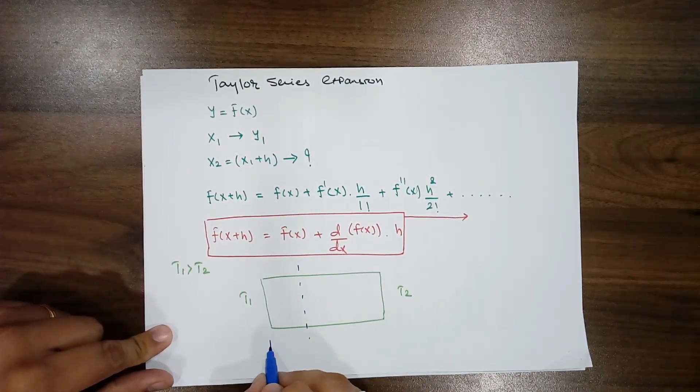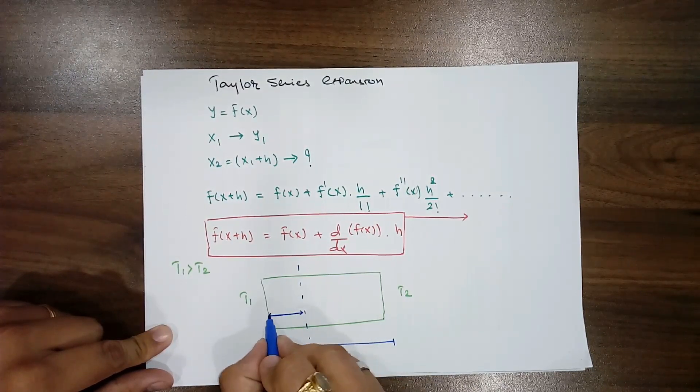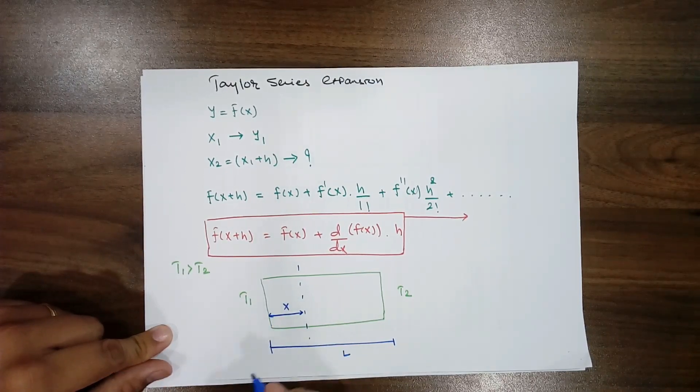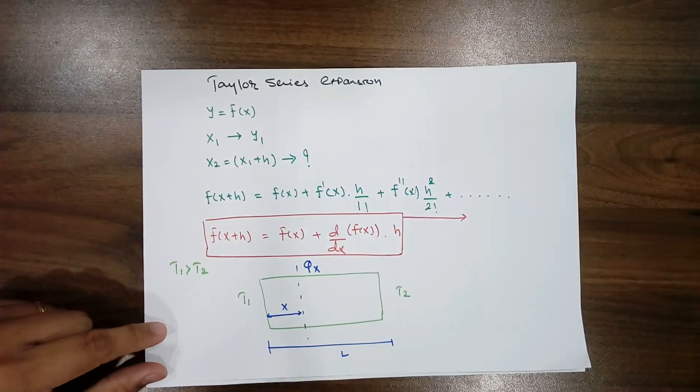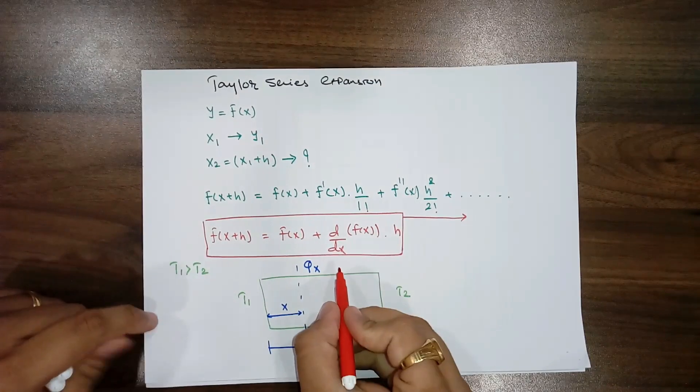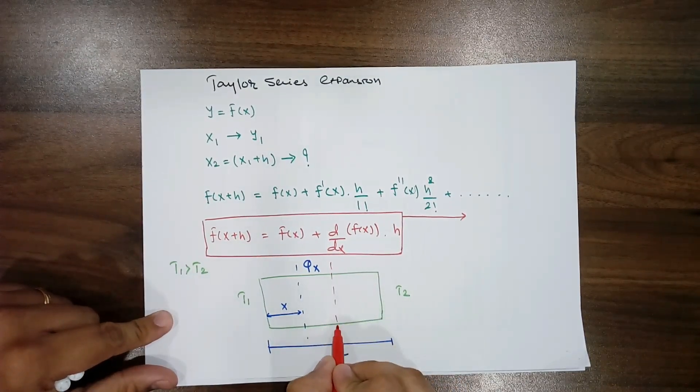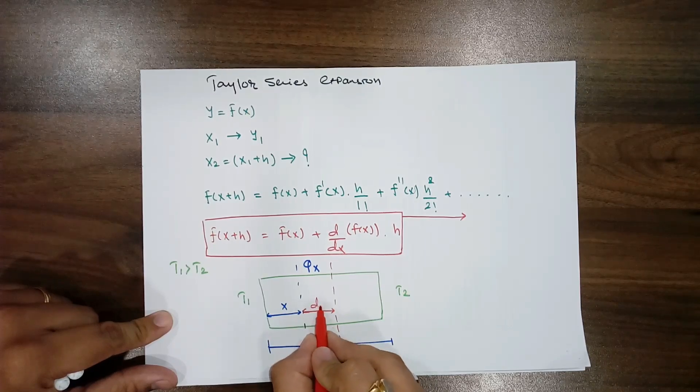If the distance between these two planes is L, and if you consider the plane at x distance from the T1, and if you know the value of heat transfer that is Qx, and from this, if you want to calculate the heat transfer at another plane which is apart from the current plane by the distance dx.